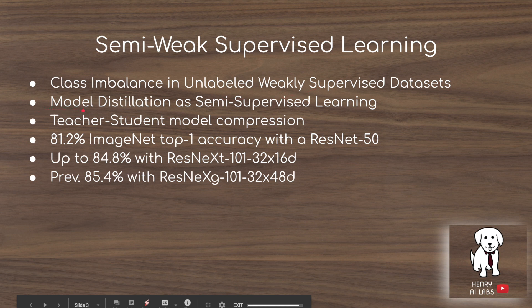Incorporating model distillation in semi-supervised learning via this teacher-student compression framework achieves 81.2% ImageNet top-1 accuracy with a ResNet-50. Scaling up to a ResNeXt-101 32x16D student network achieves 84.8%, up from 84.2% in their previous research on label engineering for the weakly supervised Instagram dataset. Their prior study achieved 85.4% but with a larger 48D capacity model, which is expensive to train.